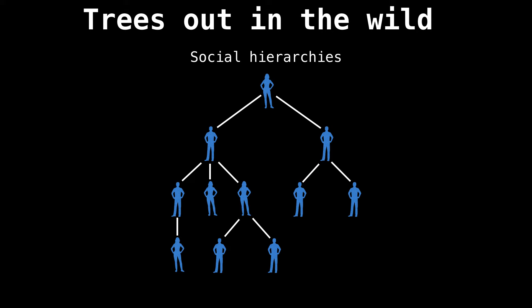Another place you see trees manifest themselves is in social hierarchies, where you often see CEOs, kings, priests and generals at the top, and interns, peasants, children in the lower class at the bottom.